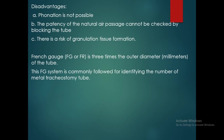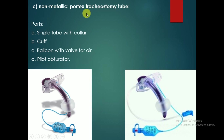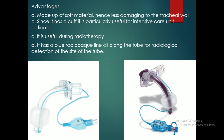Non-metallic tube — the Portex tracheostomy tube: it is made of polyvinyl chloride. Different parts of the Portex tracheostomy tube are: a single tube with a collar, which has a cuff and may also be available without a cuff; a balloon with a valve for air; and a pilot obturator, which can be seen inserted inside this tracheostomy tube. Advantages: it is made of soft material, hence less damaging to the tracheal wall. It is particularly useful for intensive care unit patients and during radiotherapy. It has a blue radio-opaque line along the tube for radiological detection of the position of the tube.